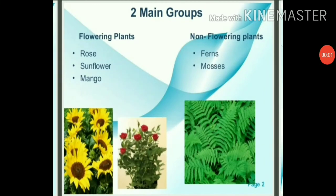Broadly, plants are of two types: flowering plants and non-flowering plants. Flowering plants are those plants which grow flowers — like rose, sunflower, and mango. Non-flowering plants are those plants which do not grow flowers, like ferns and mosses.